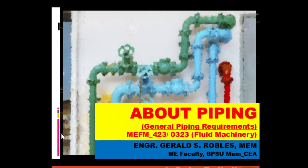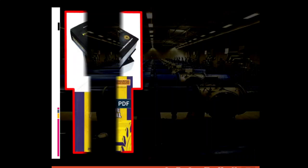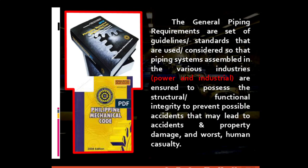Let us now proceed to our general discussion. Our topic is about piping, second part. I will be discussing the general piping requirements. The general piping requirements are a set of guidelines or standards used so that piping systems assembled in various industries such as power, industrial, or manufacturing are ensured to possess structural or functional integrity to prevent possible accidents that may lead to property damage and worst, human casualty.